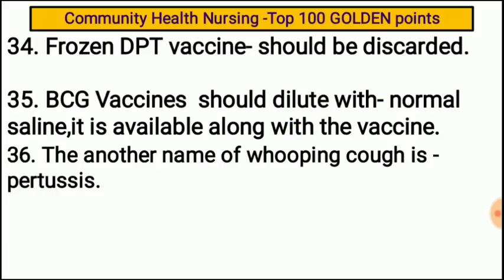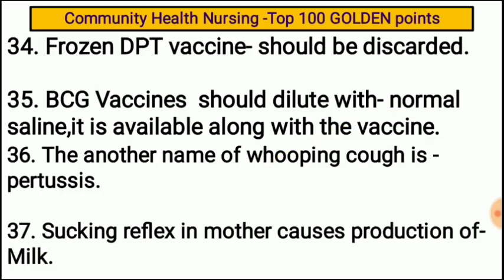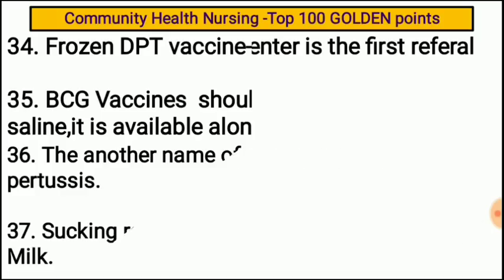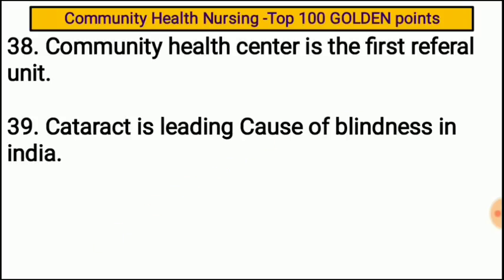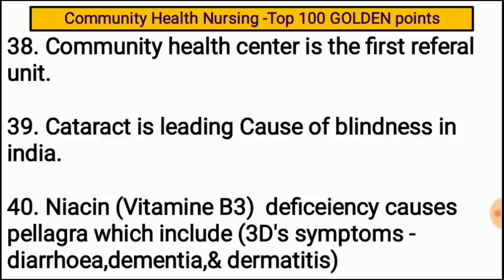The another name of whooping cough is pertussis. Sucking reflex in the mother causes production of milk. Community Health Center is the first referral unit for a village. Cataract is the leading cause of blindness in India. Niacin is also called Vitamin B3, and its deficiency causes pellagra, which includes 3D symptoms: diarrhea, dementia, and dermatitis.